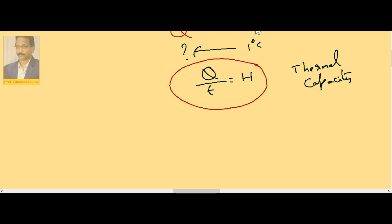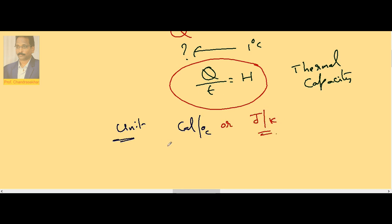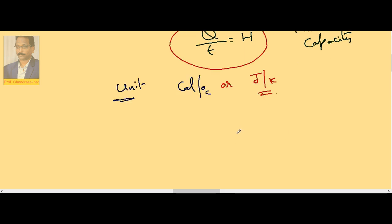So heat capacity is denoted by H. Now what is the unit? In CGS, Q is in calories and temperature is in degrees centigrade, so the unit is calorie per degree centigrade. In the SI system it is Joule per Kelvin. So calorie per degree centigrade or Joule per Kelvin is the unit of thermal capacity or heat capacity.